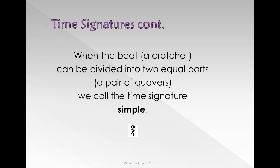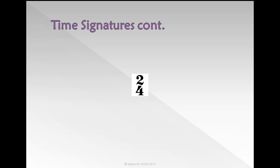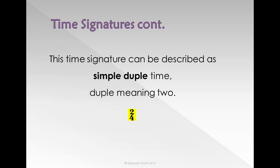For example, if the time signature is 2/4, the two at the top tells us there are two beats per bar. The four at the bottom tells us that these beats are quarter note or crotchet beats. Therefore, 2/4 has two quarter note crotchet beats per bar. This time signature can be described as simple duple time, simple because the crotchet can be divided equally into two and duple meaning two.